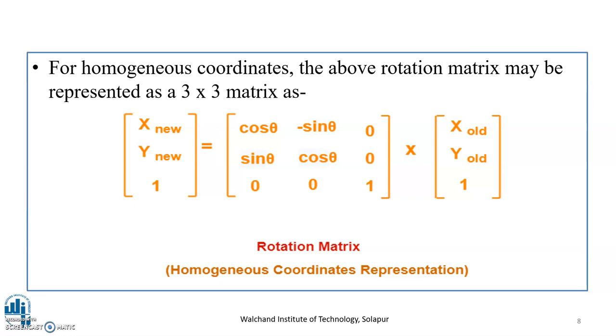Why is it given using a homogeneous 3 by 3 matrix? This is for the sake of our mathematical calculation. However, we can simply use X-new, Y-new is equal to cos theta minus sin theta, sin theta cos theta into X-old, Y-old. Both ways we can use the matrix for our calculation, depending on the need of the problem.